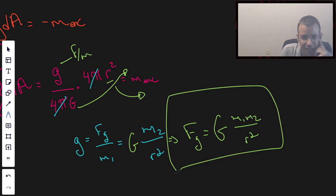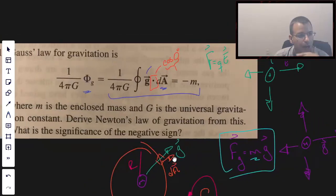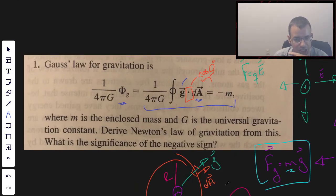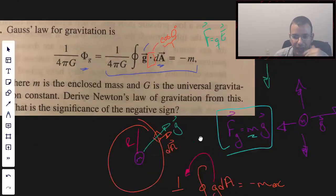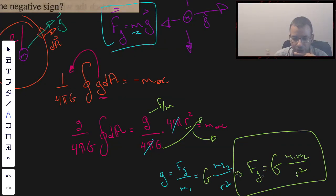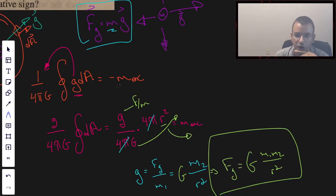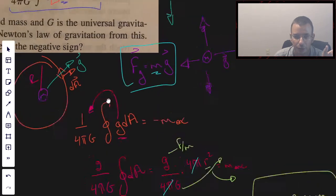And so what this is saying is this concept we had here of Gauss's law for gravitation, that is the same thing as force equals gravitation constant mass 1 times mass 2 over r squared. It's just written in a different way.